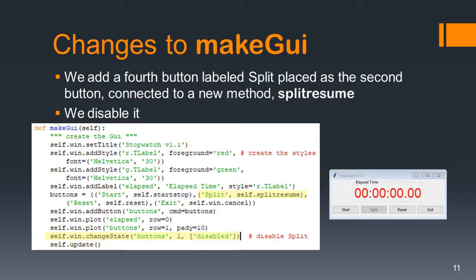The changes to make GUI are quite straightforward as well. When we define our buttons, we're going to have to add a new button which will be labeled split, and it will point to a new method called self.split_resume. We're going to put it as our second button right after the start button. And when this is created, we want to disable it - so we're going to do self.when_change_state buttons number one, which will be the second button, to disabled.